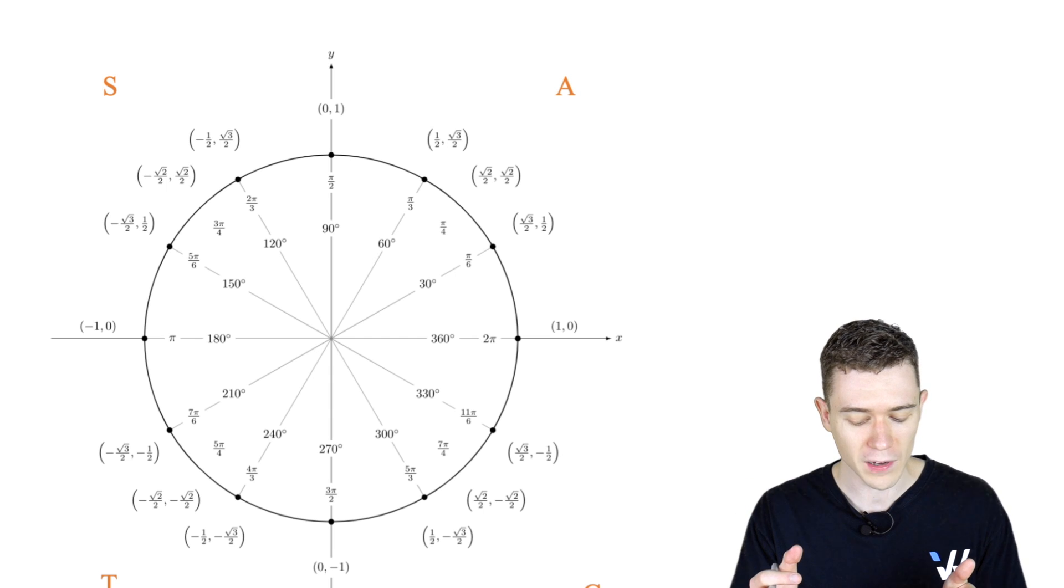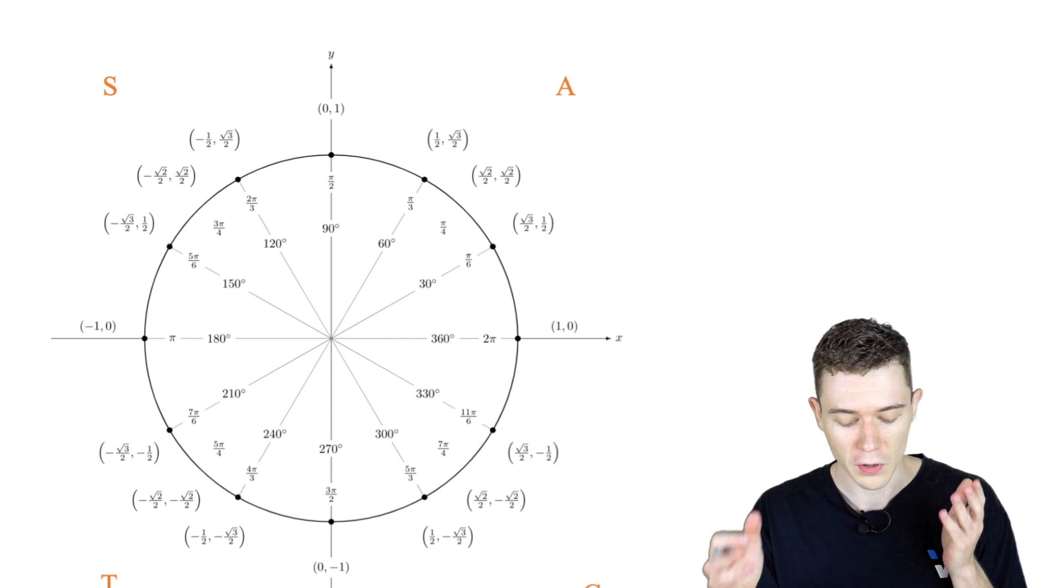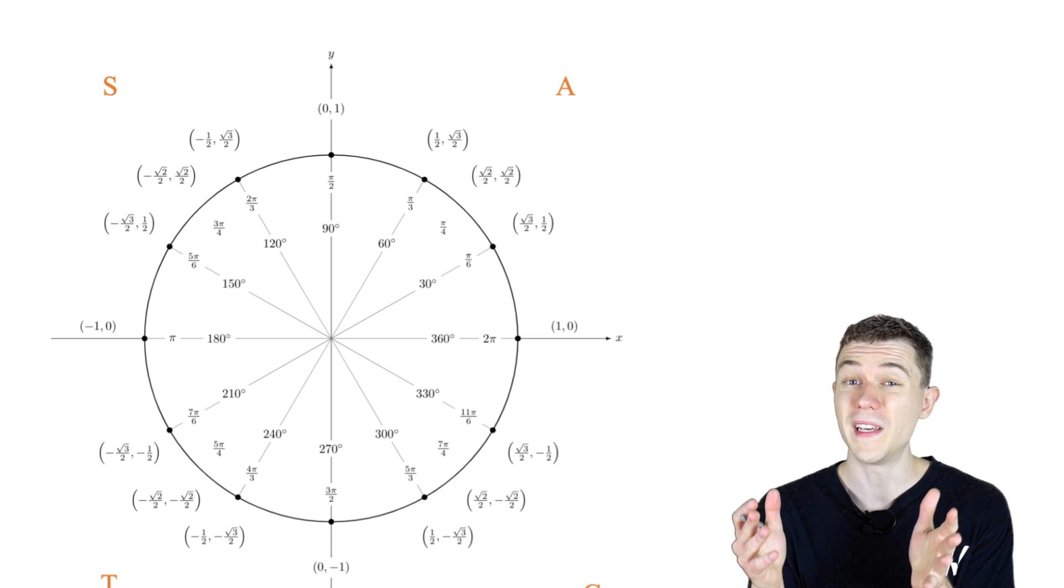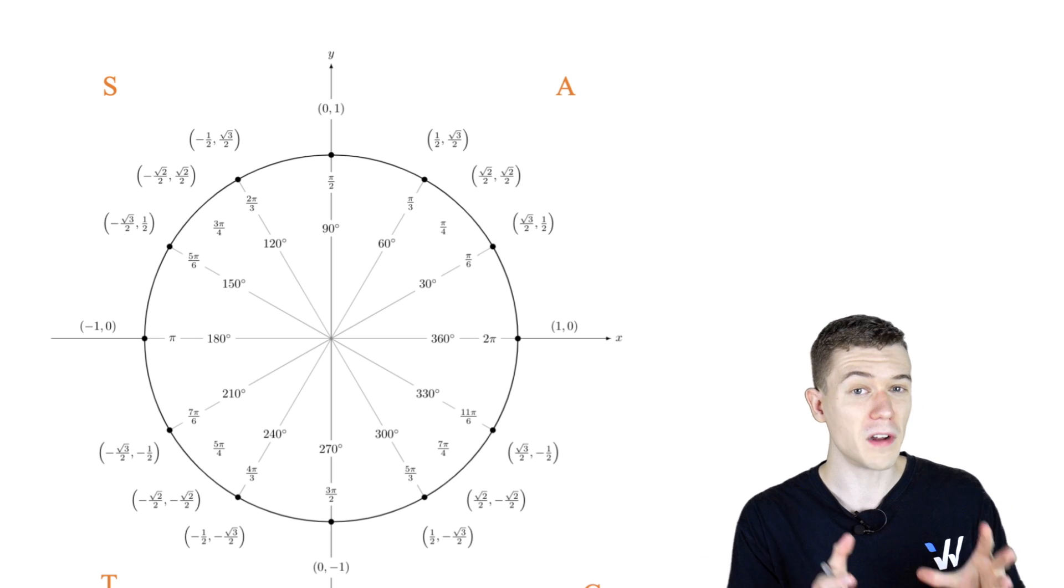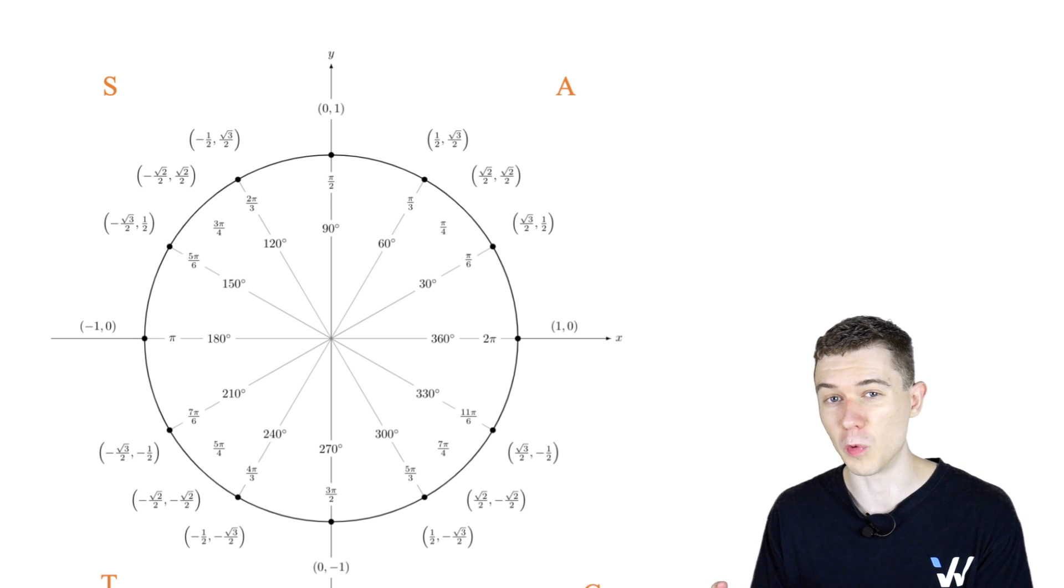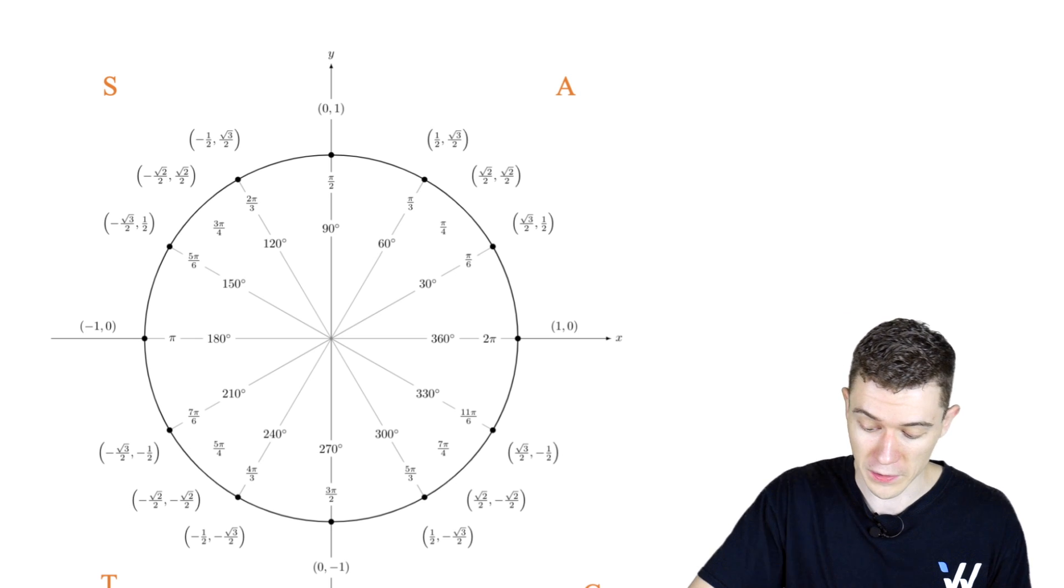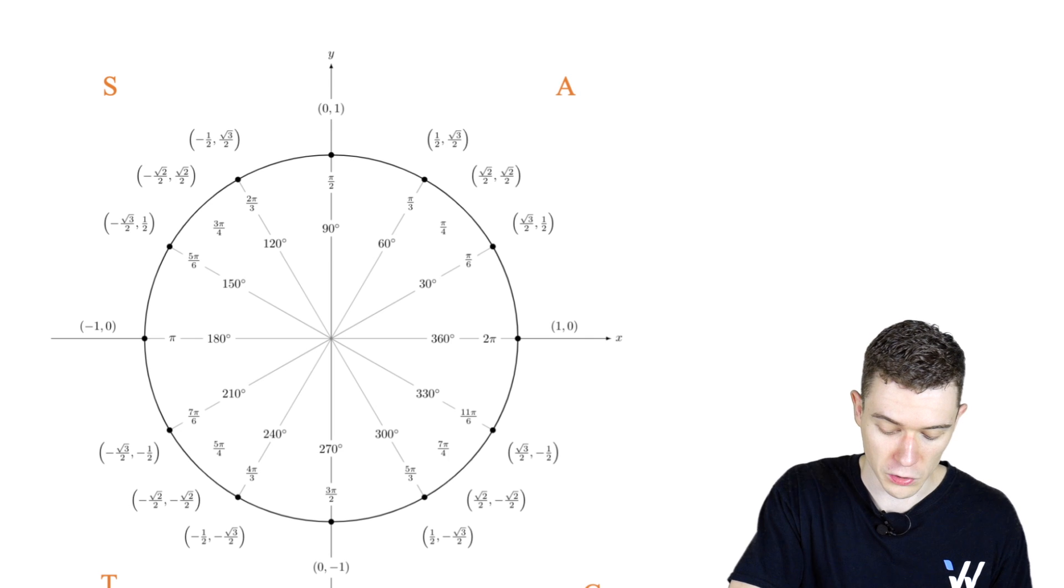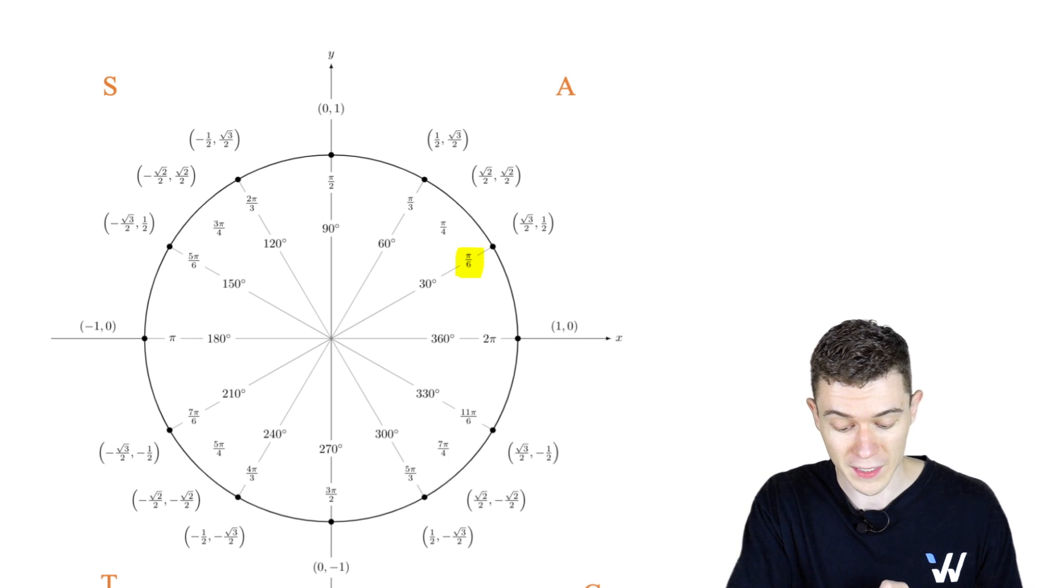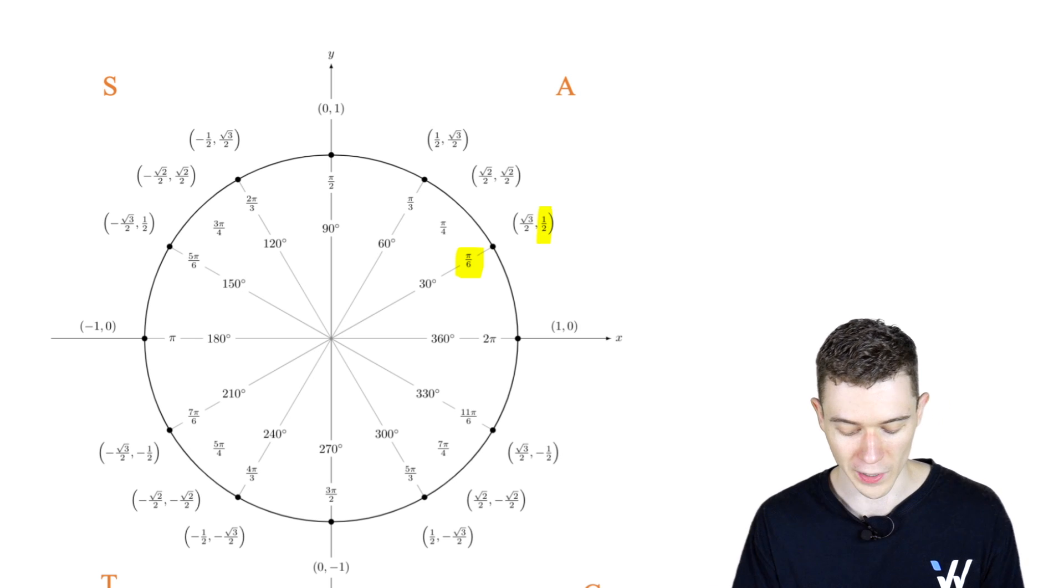You'll notice that all of these angle measures are either 30, 60, or 45-degree multiples. So we can combine this with the knowledge that cosine theta are the x values, sine theta are the y values. For instance, on the unit circle here, we could do sine of pi over 6. We look at the pi over 6 in radians, sine are the y values, we just get 1 half.